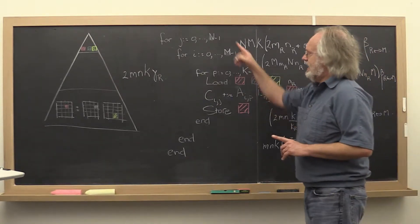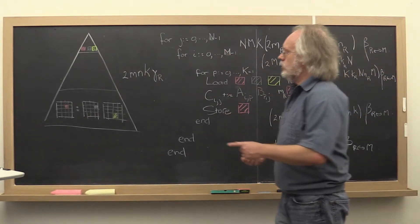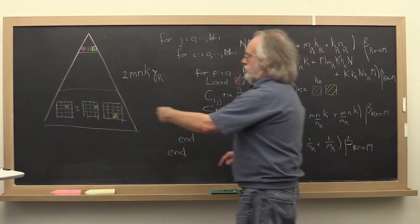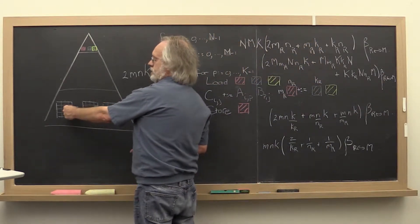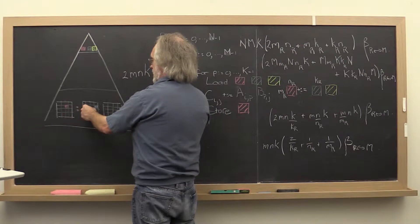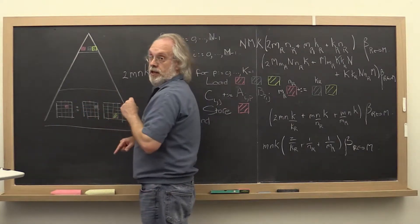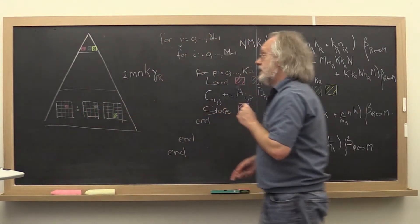And what you may have noticed is that inherently the way we organized our loops, the inner loop fixes the block of C that we're computing with and then marches through different pairs of blocks of matrices A and B.